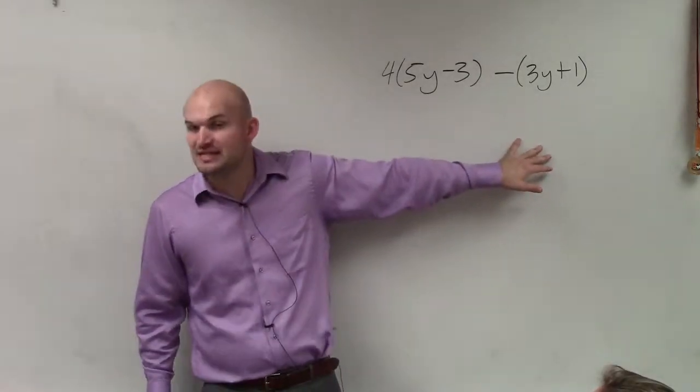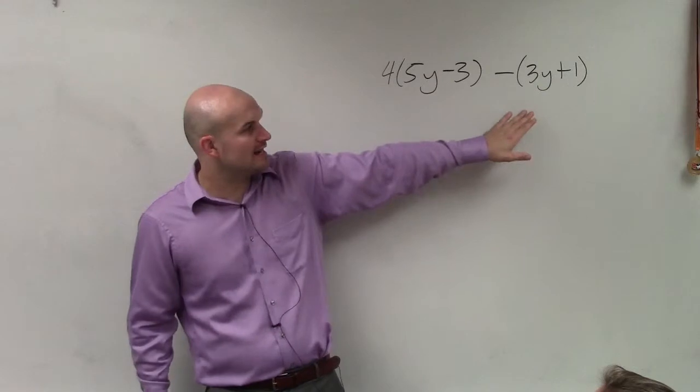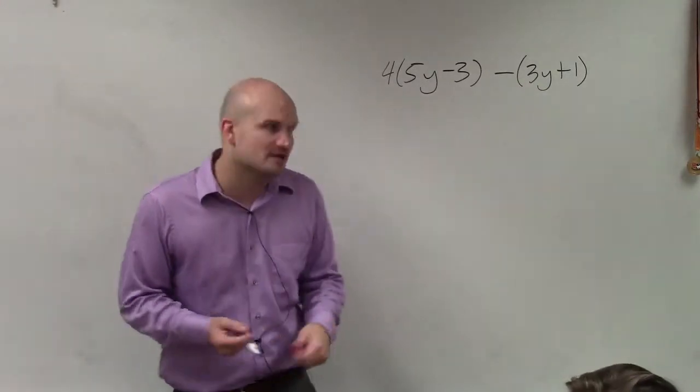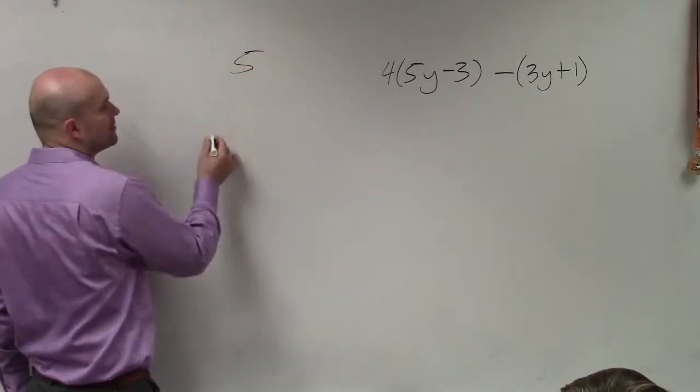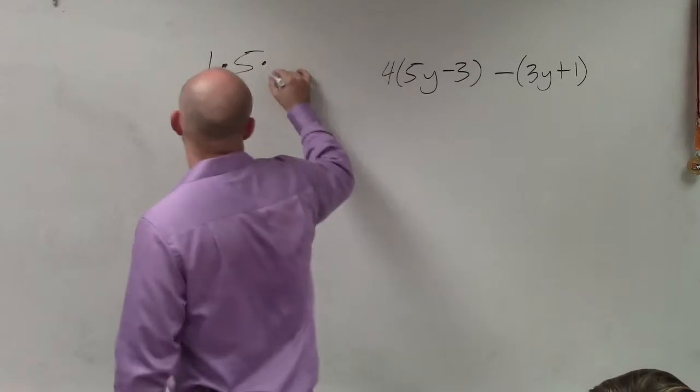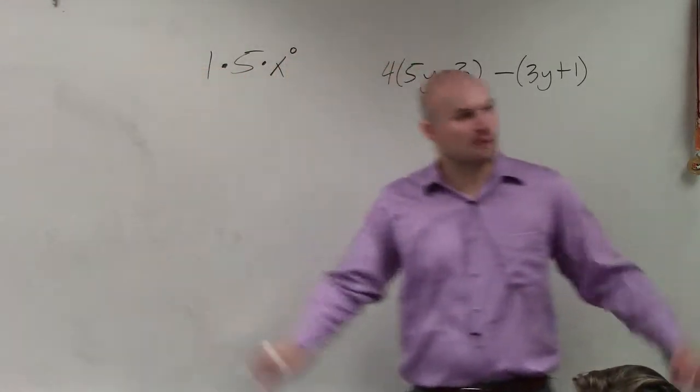The next one is one of the more confusing topics in simplifying algebraic expressions is we just see a negative sign outside of there. So it's important to understand whenever we have just a number, we can always think of that number being multiplied by 1. Just like we can also think of that number as having x to the 0 power.